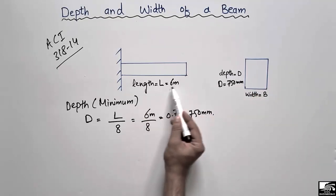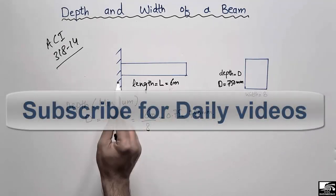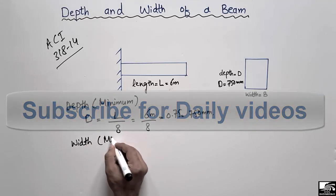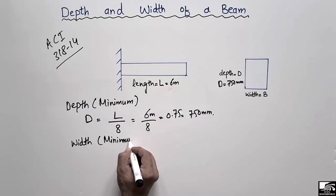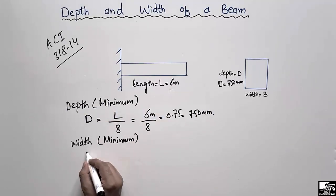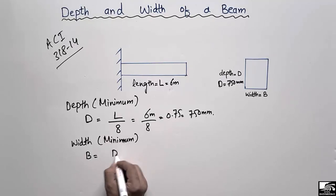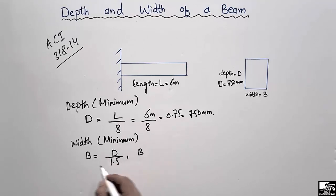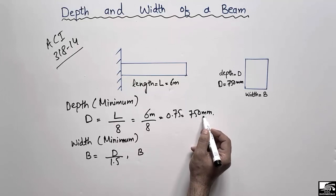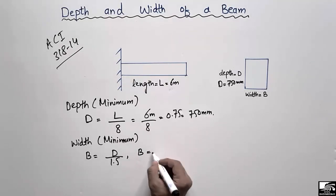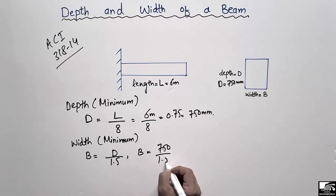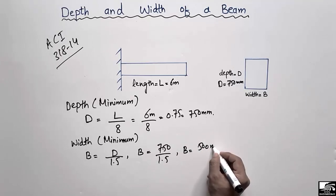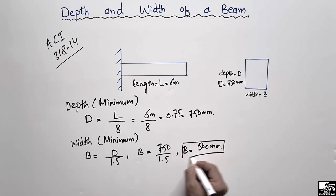Now, what will be the width of the beam if the length is 6 meters for a cantilever type? The minimum width or breadth of the beam will be equal to b = d divided by 1.5. Here d is 750 millimeters, so 750 divided by 1.5 gives us the minimum width of this beam equal to 500 millimeters.